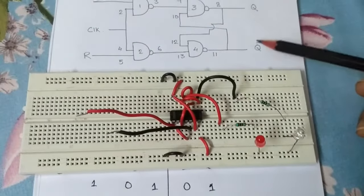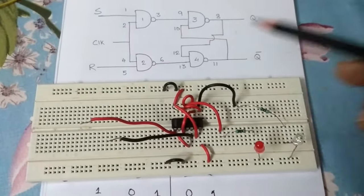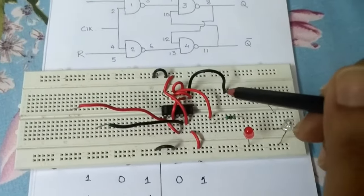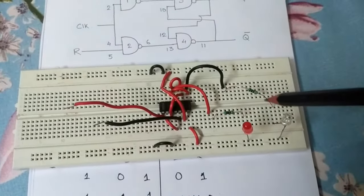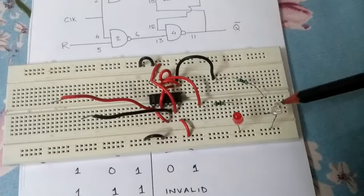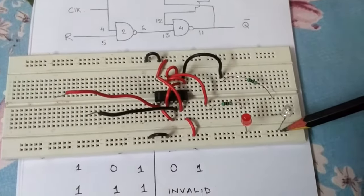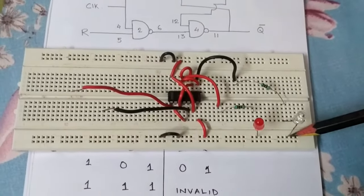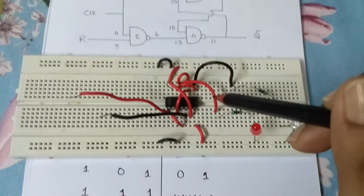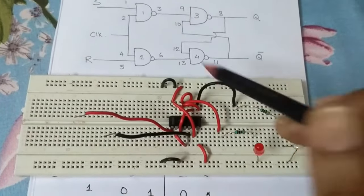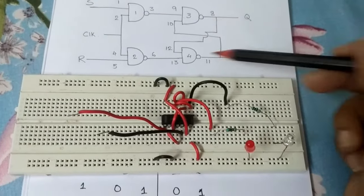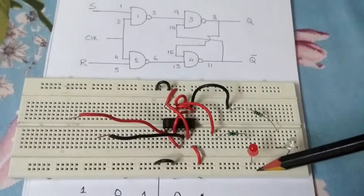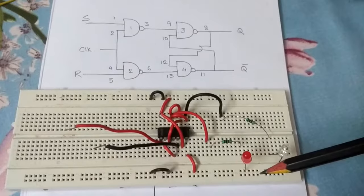After that, you need the output that is Q and Q bar. So Q is being connected from pin number 8. This is pin number 8 of the IC and I have attached a resistance, this is a 1 kilo ohm resistance, and from there I have connected an LED so that is easier for you all to understand the truth table. And this is Q bar which is being connected from pin 11. The same way I have connected another LED for better understanding.